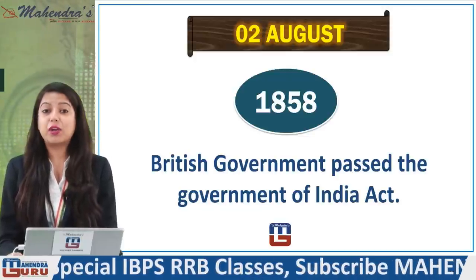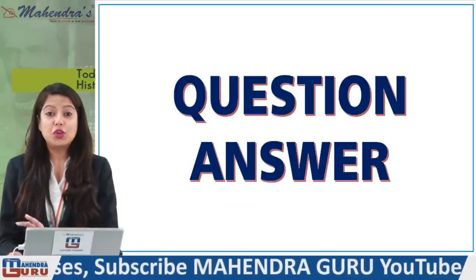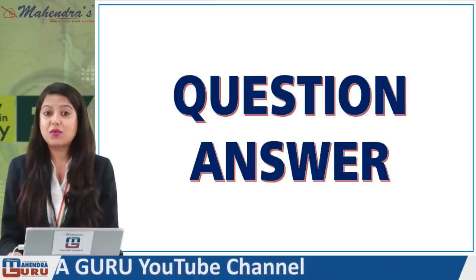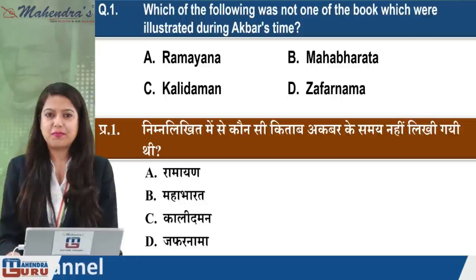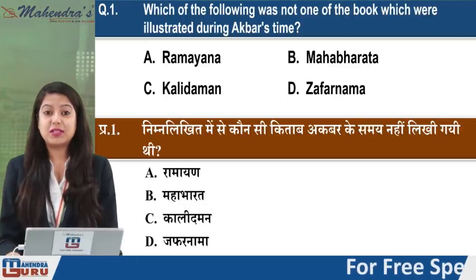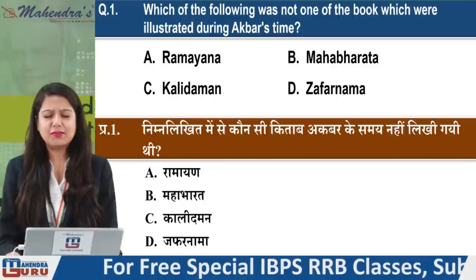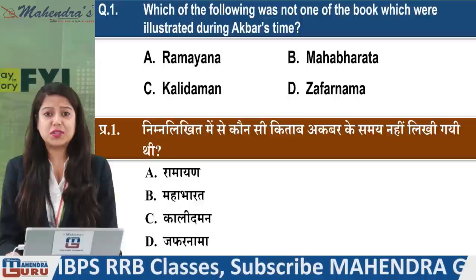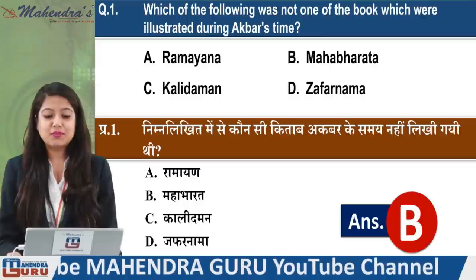Moving towards the FYI important questions - the question bank. On this particular day, 2nd August, no great personalities were born or died whose names need to be included here. So, first question: Which of the following was NOT one of the books illustrated during Akbar's time? Options: Ramayana, Mahabharata, Kali Daman, or Zafar Nama. The answer is option B - Mahabharata.